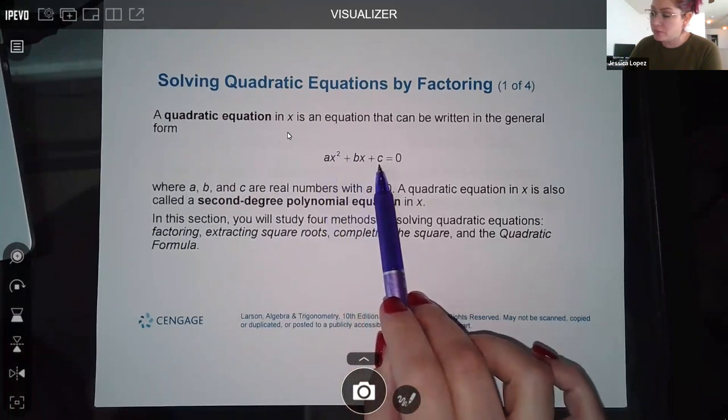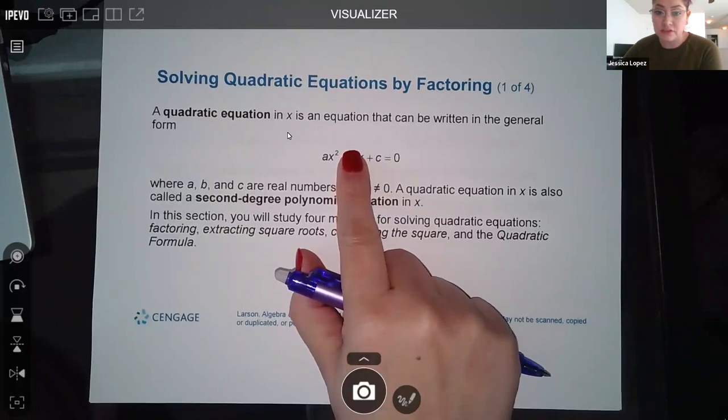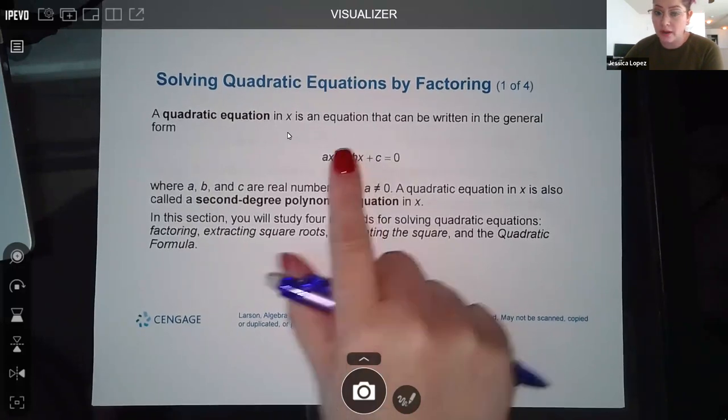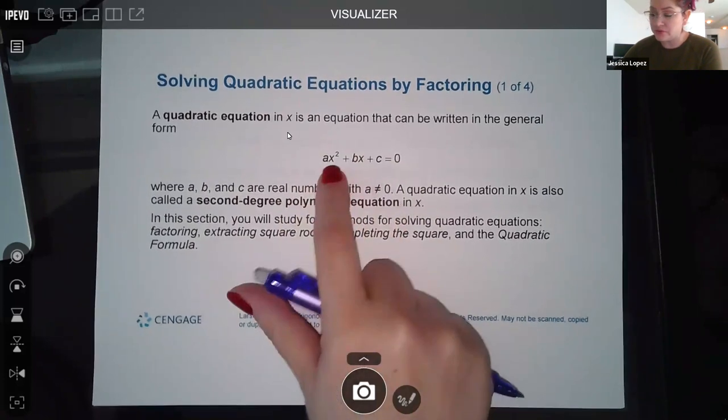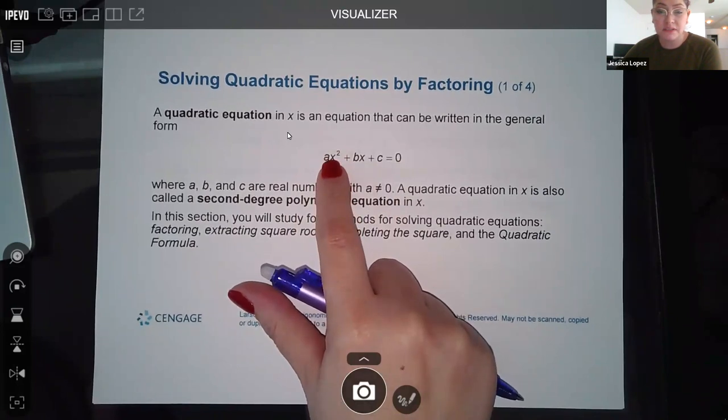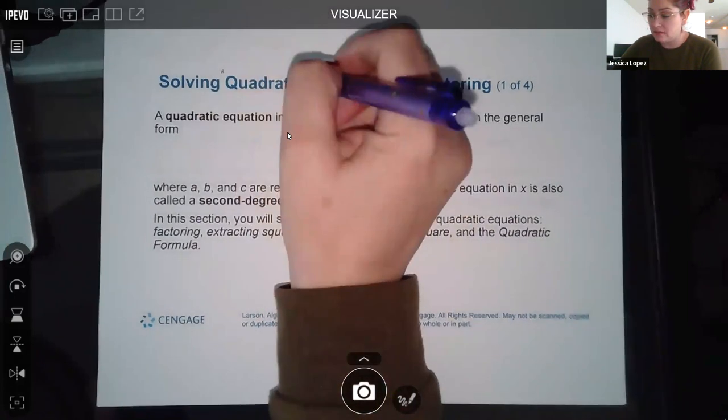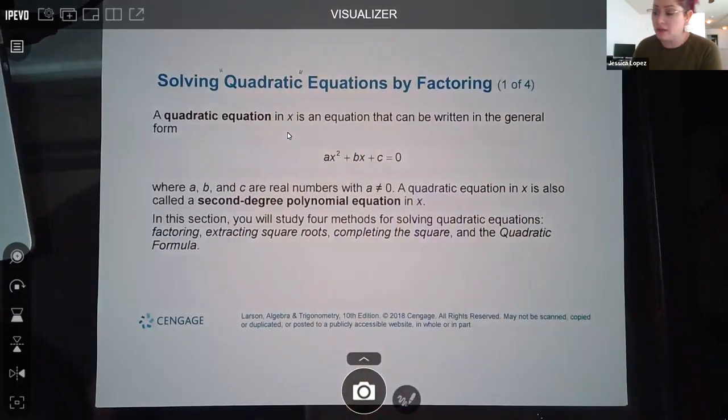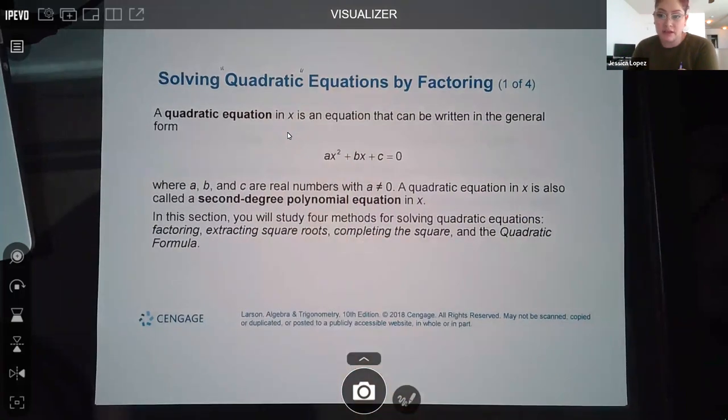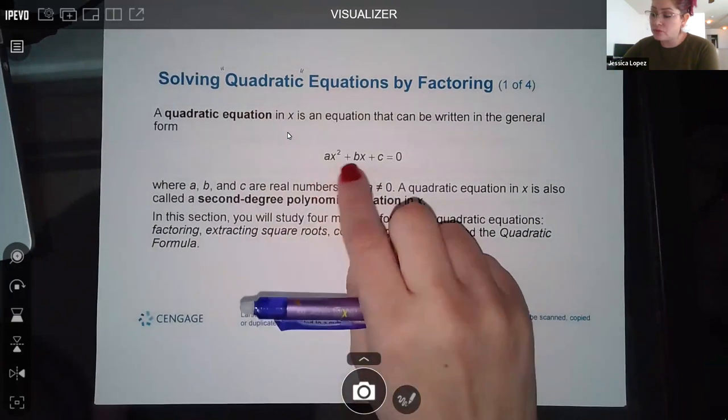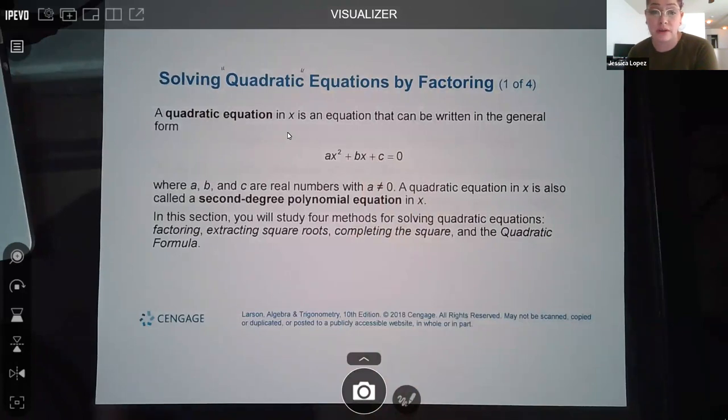So it's going to be that trinomial. Now you could have a binomial and have this term missing, or a binomial and have this term missing. What you won't have is this term missing. So that's why it says a cannot equal zero. So this term cannot be missing. If that term is missing the x squared term, then it's not considered a quadratic anymore. It would just be a linear equation that you're solving at that point. So you do have to have the x squared in there. But whether or not you have all three terms or just these two or just those two is irrelevant. They're all considered quadratics.